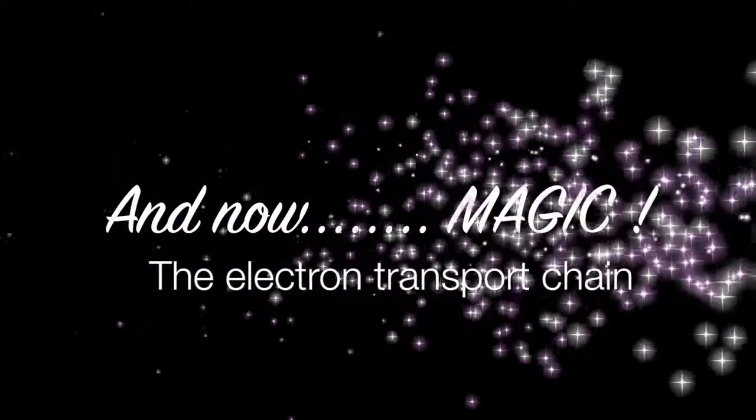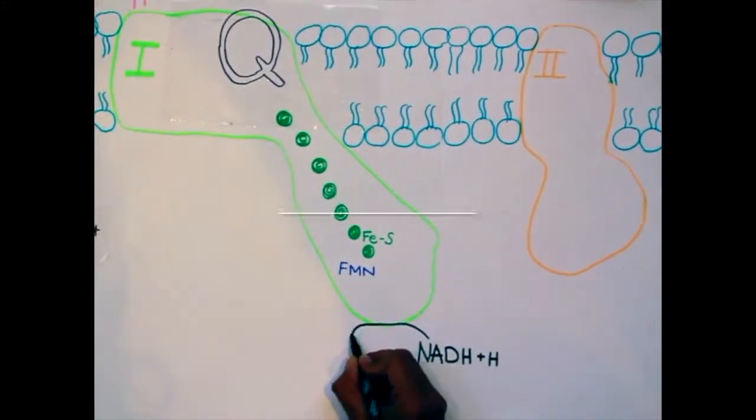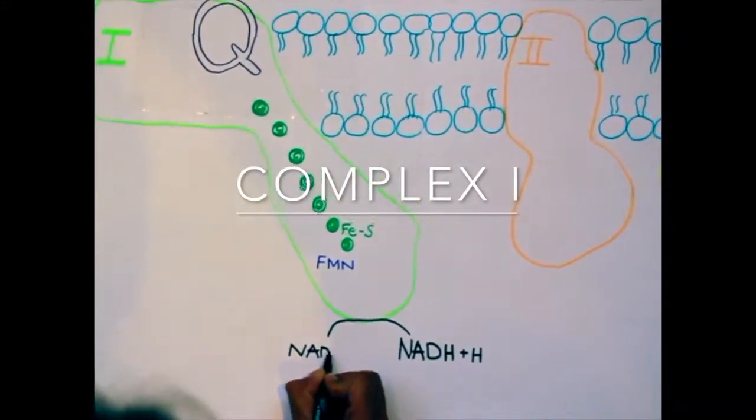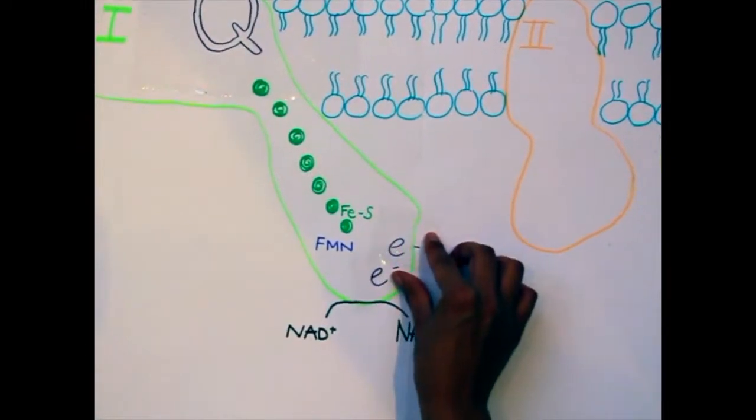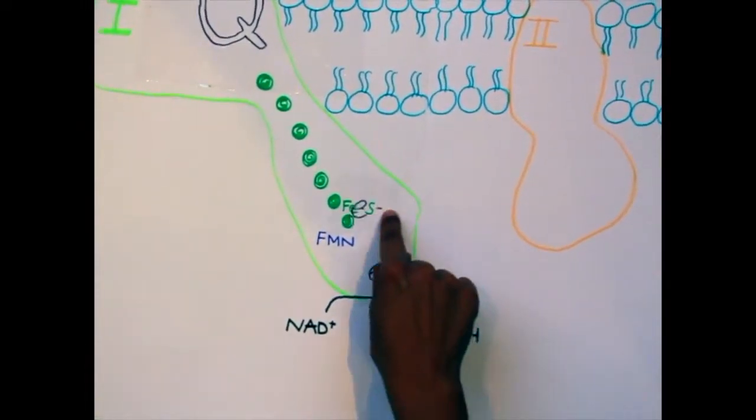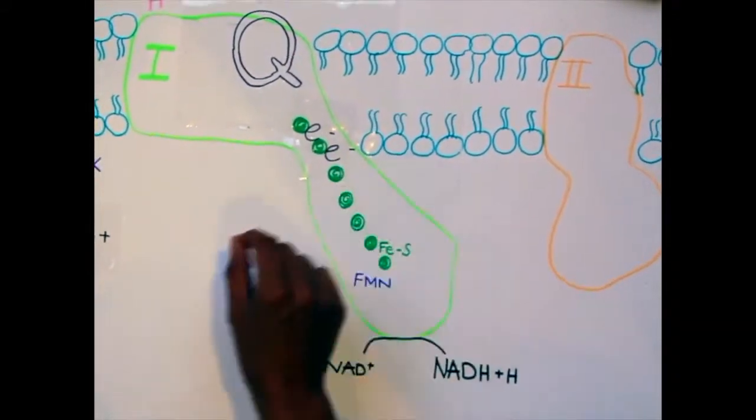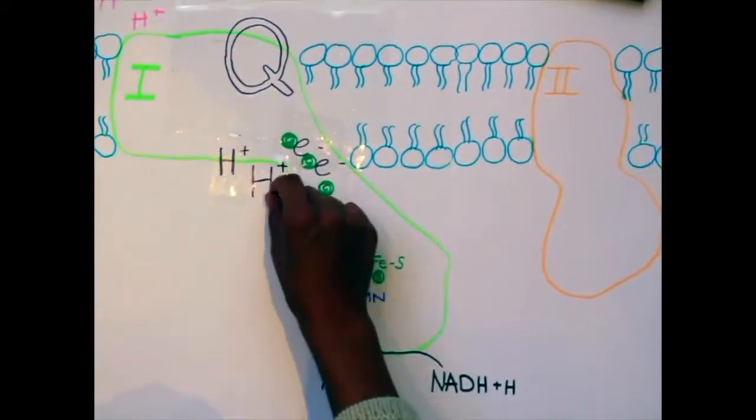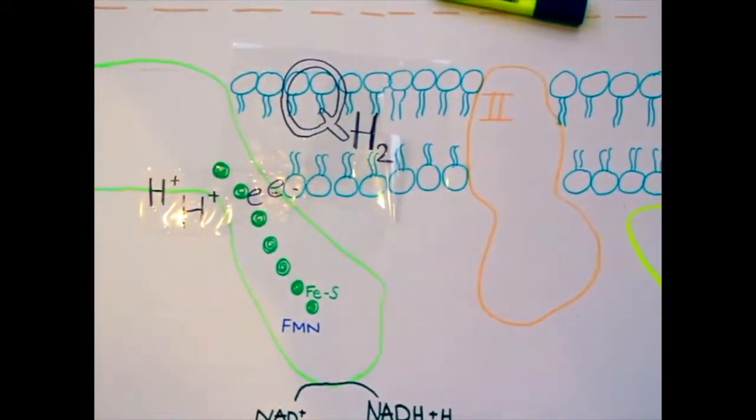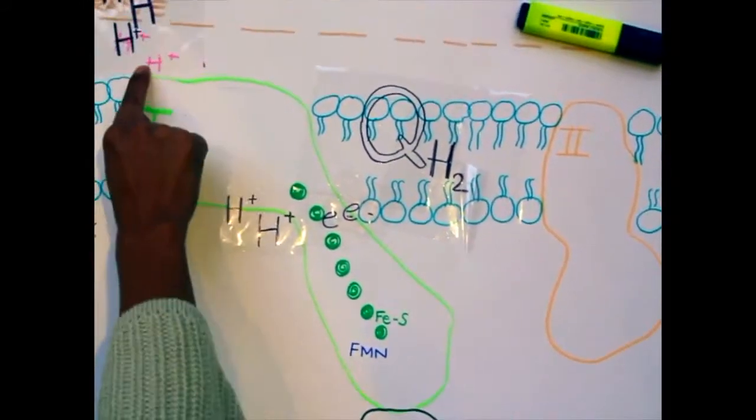And now, magic! NADH will become oxidized into NAD+. FMN will take its 2 electrons. Then the iron-sulfur center will bring the electrons to Q one at a time. From the matrix, 2 protons will join Q, forming QH2. And 4 protons will be pumped up.